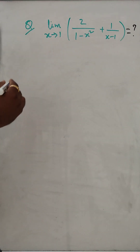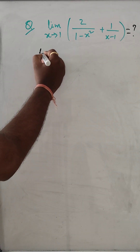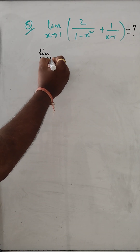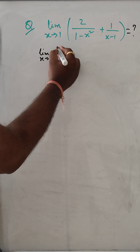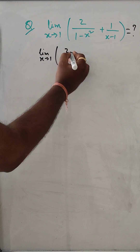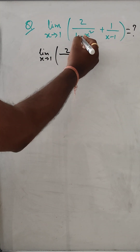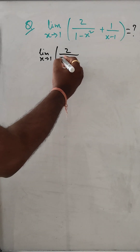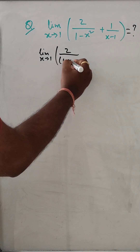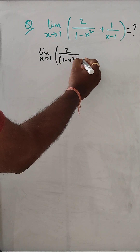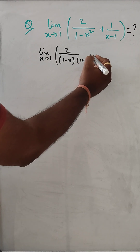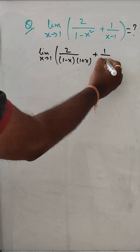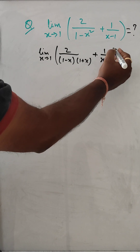Let us solve. Limit x tends to 1. Here for the denominator of the first term, we can use the a squared minus b squared formula, so 1 minus x squared becomes (1 minus x)(1 plus x). And plus 1 over (x minus 1).